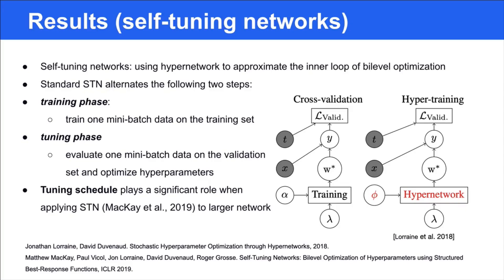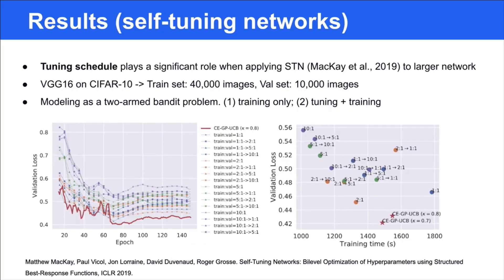However, it's expensive to evaluate densely since evaluation and taking gradients are expensive. Moreover, it is not optimal to tune all the time due to the biases of one mini-batch validation. We also find the tuning schedule plays a significant role when applying self-tuning networks to larger networks.